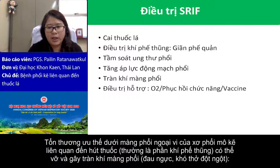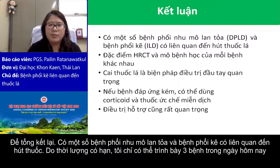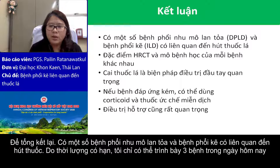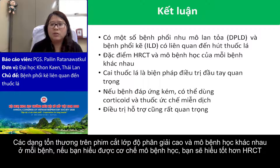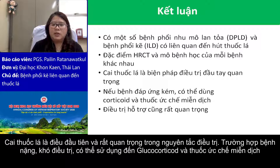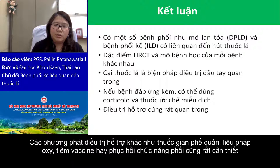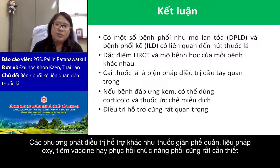So we have to observe if patients have chest pain and shortness of breath suddenly. To sum up, there are several diffuse parenchymal lung diseases that have been linked to smoking. Today I only had time to talk about three. HRCT patterns and histopathological patterns are distinct in each disease — if you understand the pathology, you will understand the HRCT. Stop smoking is the main initial treatment. If the disease is refractory, steroids and immunosuppressives might be applied. Don't forget to give supportive treatment like bronchodilators, oxygenation, vaccination, and pulmonary rehabilitation.